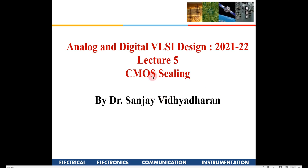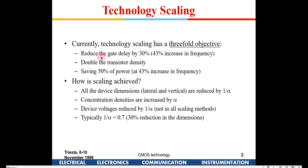In this lecture we will talk about CMOS scaling. Scaling means what happens when the minimum feature size of CMOS devices is reduced — how we have moved from 240 micron to 180 to 90 to 45 to 7 nanometers. This is known as technology scaling or CMOS scaling.